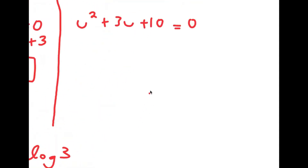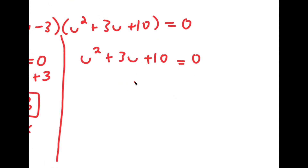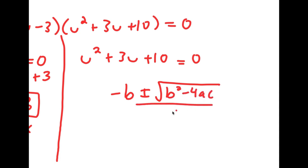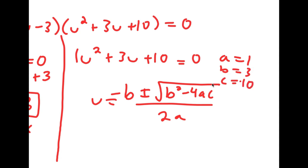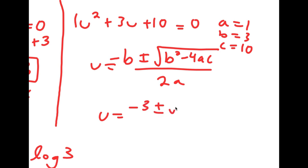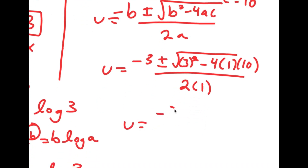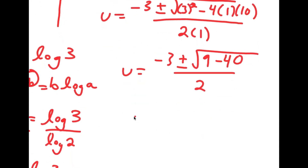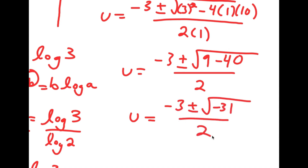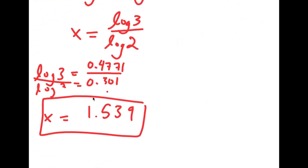Going back to u squared plus 3u plus 10 equals 0, I use the quadratic formula: negative b plus or minus the square root of b squared minus 4ac, all over 2a. Here a is 1, b is 3, and c is 10. This gives u equals negative 3 plus or minus the square root of 9 minus 40, all over 2, which equals negative 3 plus or minus the square root of negative 31 over 2. Since the square root of a negative number doesn't give a real result, my only solution is x equals 1.539.